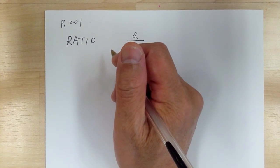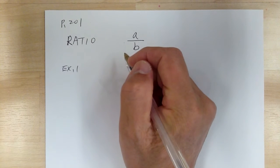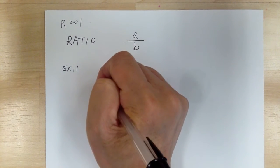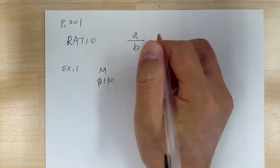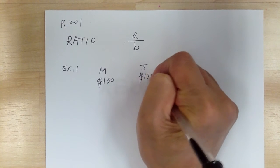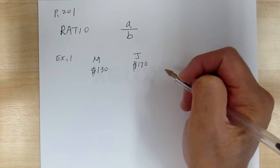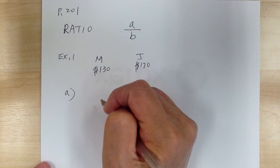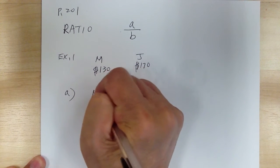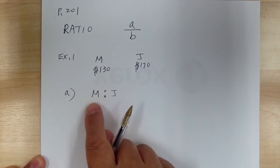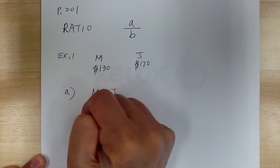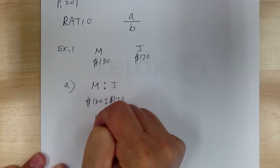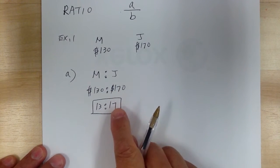Let's go to example one to see how this works. It says Marcy has saved $130 and Jen saved $170. When you're doing a ratio, make sure you pay close attention to the order of what it asks for. Part A asks: find the ratio of Marcy's saving to Jen's saving. So Marcy is $130, Jen is $170. If you reduce, you get 13 to 17. That is the ratio of Marcy to Jen.